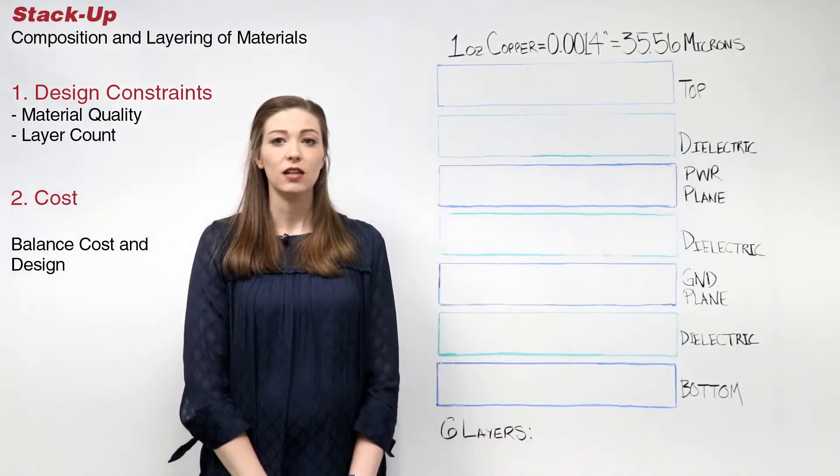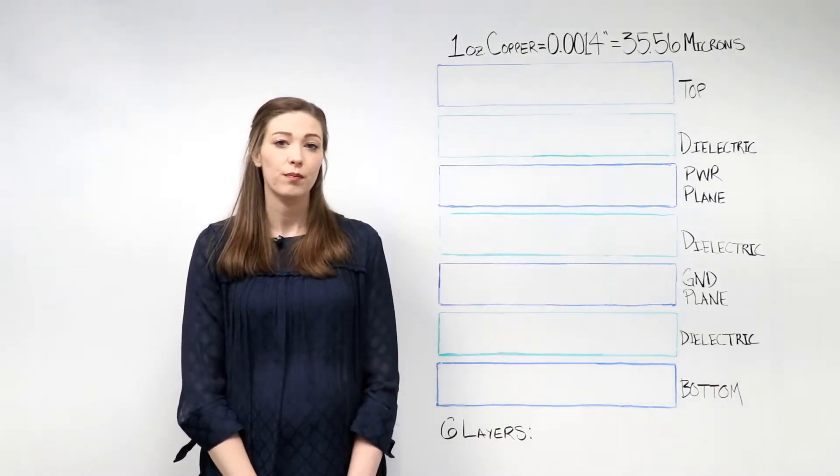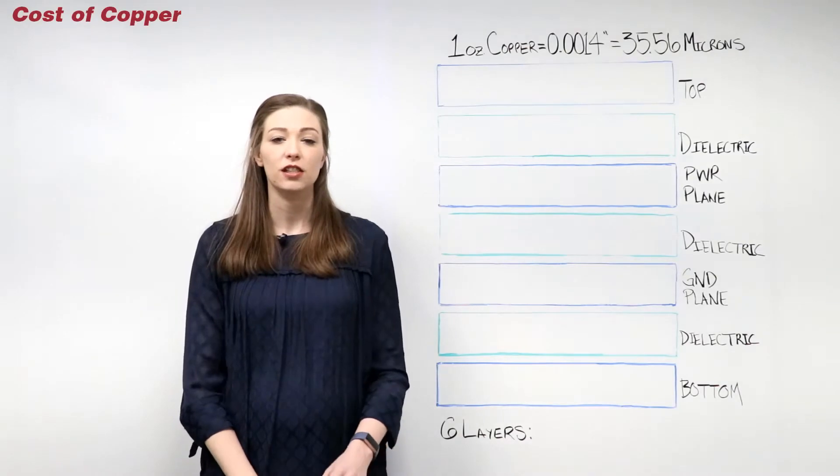To create this balance, let's take a look at the additional costs of creating a PCB stack up. The first item to consider is the cost of copper thickness.